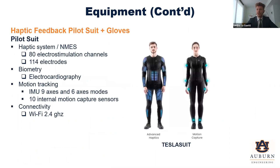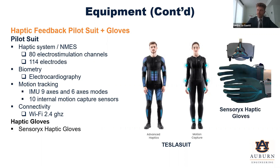Regarding the haptic feedback pilot suit, this is a Tesla suit with a haptic feedback system with about 80 electro-stimulation channels and 114 electrodes. It has the capability of biometry and motion tracking through both six-axis and nine-axis IMUs — the three additional axes come from the magnetometer — and it transmits its data through WiFi. The last piece of equipment I plan on acquiring is haptic feedback gloves, so that a pilot can be cued information through these haptic feedback gloves.